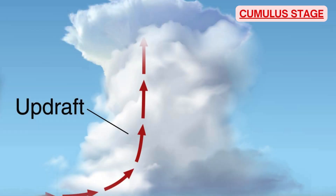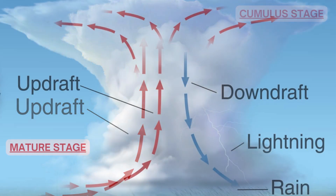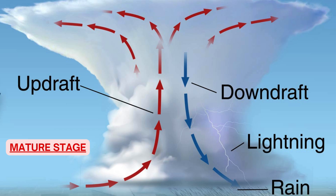In the initial stage, several small cumulus clouds combine to form a large cumulus cell approximately five nautical miles across. There are strong updrafts of approximately 1,000 to 2,000 feet per minute. Air from the sides and below is drawn in to replace the rising air, causing turbulence. The initial stage lasts about 15 to 20 minutes and is characterized mainly by updrafts.